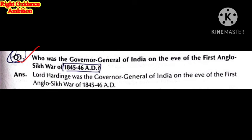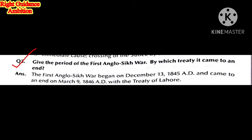Who was the Governor General of India on the eve of the First Anglo-Sikh War? The First Anglo-Sikh War was in 1845–1846, and the Governor General was Lord Hardinge. Give the period of the First Anglo-Sikh War and by which treaty it came to an end. It lasted from 13 December 1845 to 9 March 1846, and it ended with the Treaty of Lahore.